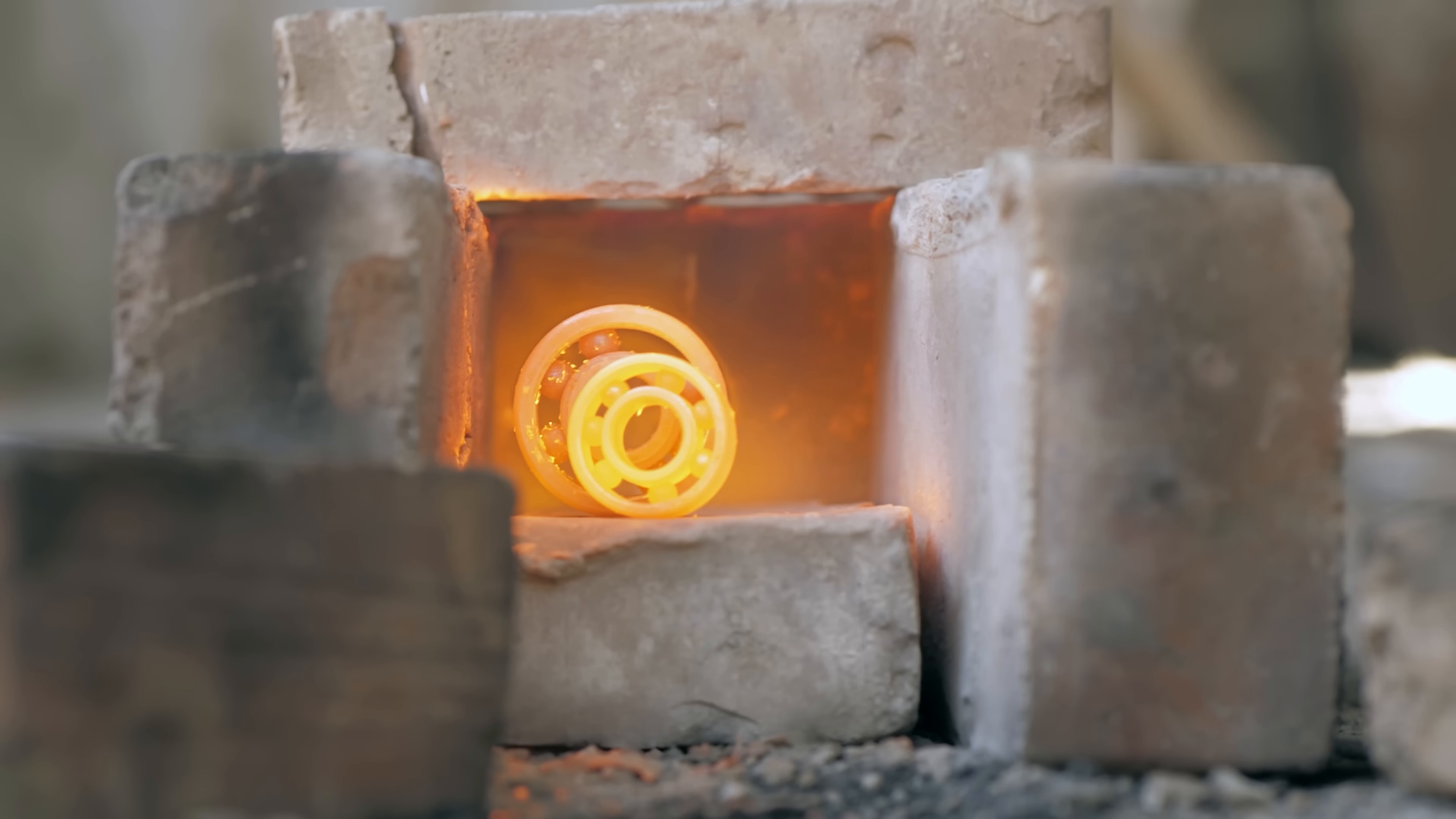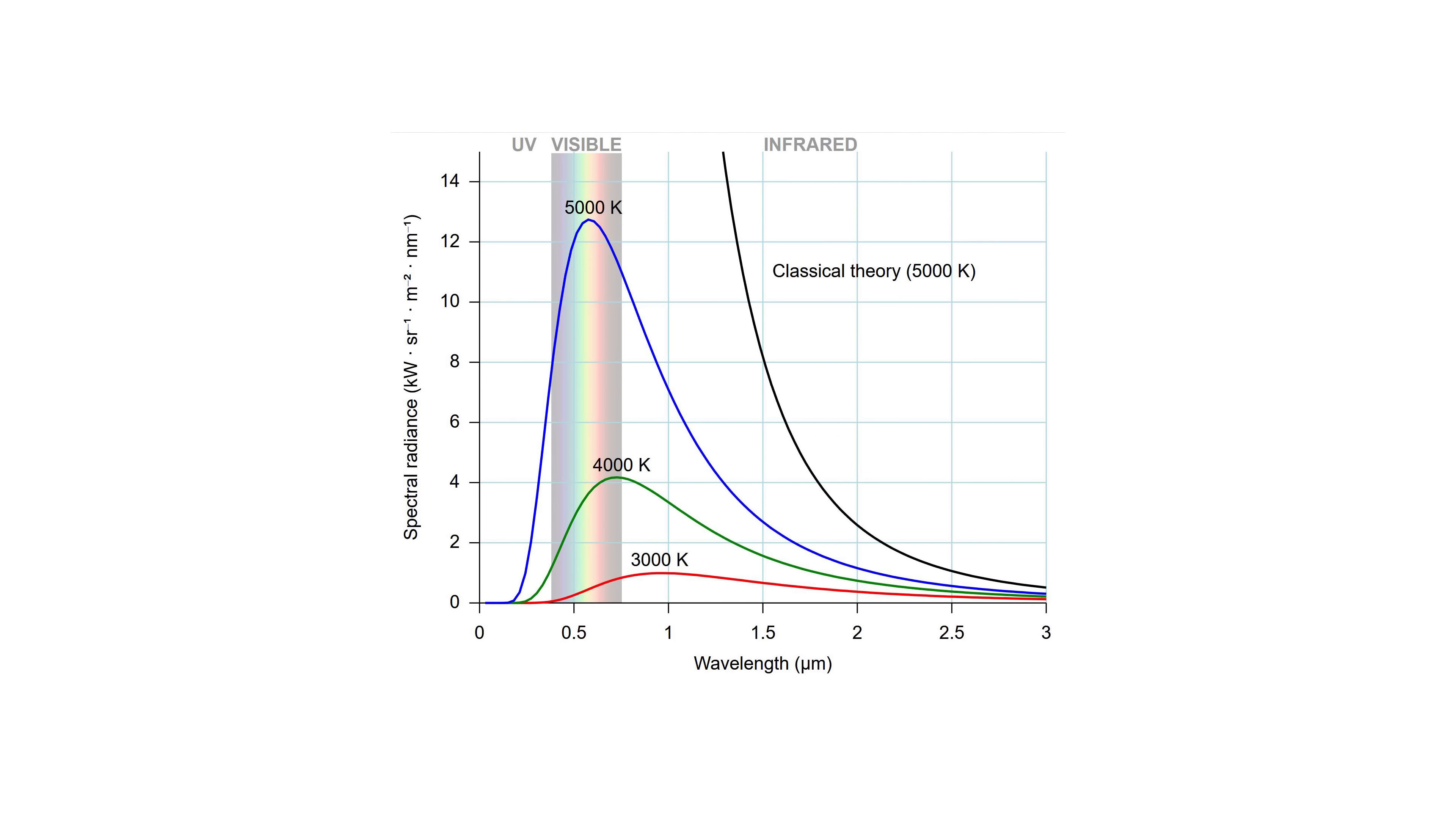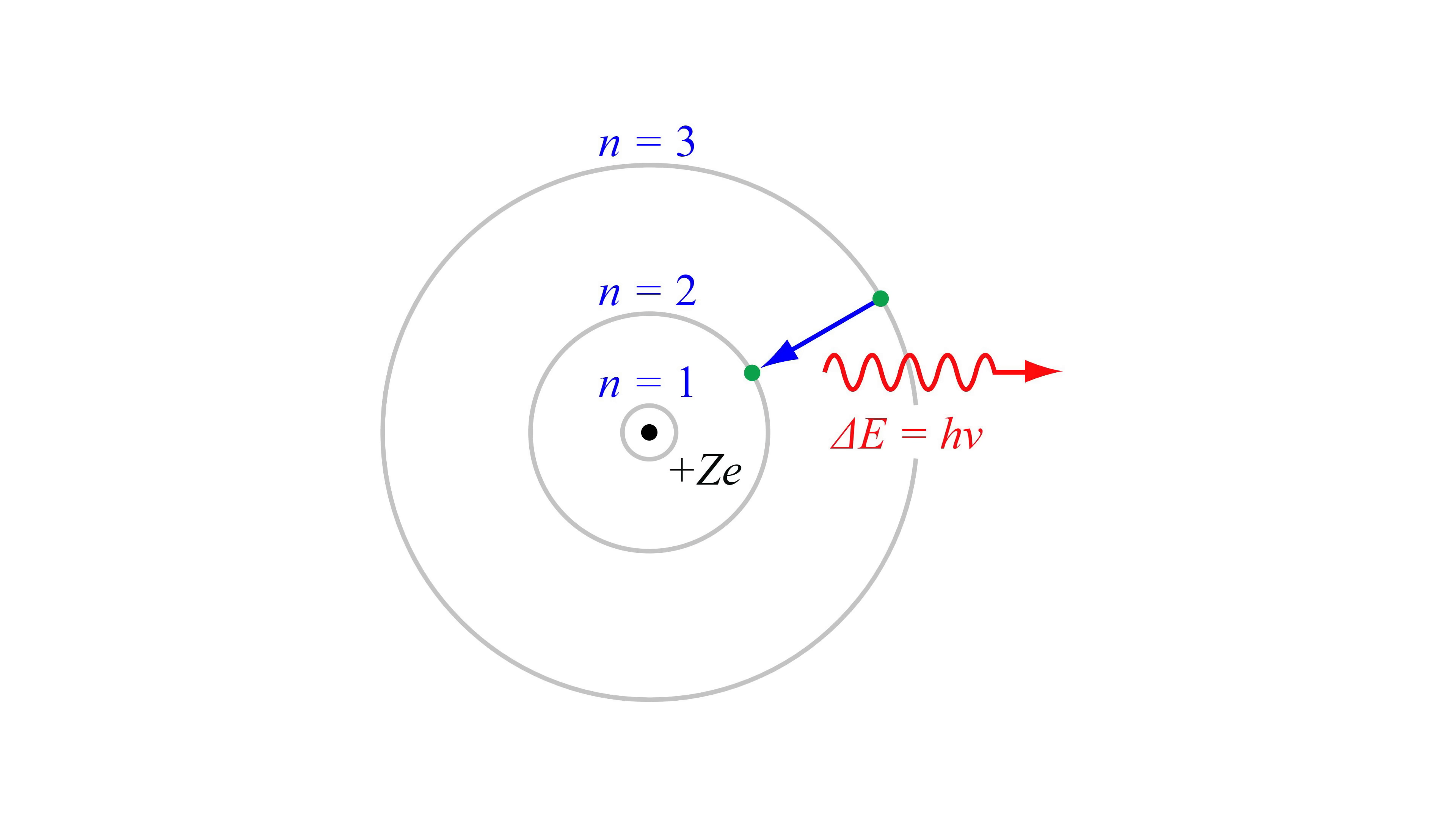The physicist Max Planck first used this constant when he was working on trying to solve the problem of how hot things emitted radiation. He couldn't get his equations to match experiments unless he only allowed the energy of the light to come in whole increments of a specific value.